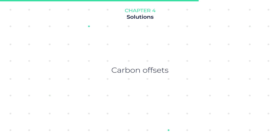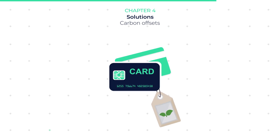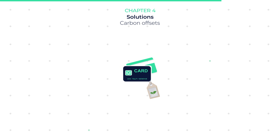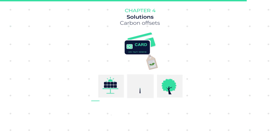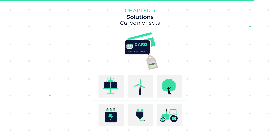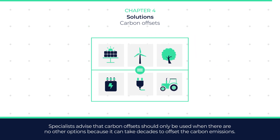Carbon Offsets. Another possibility is the utilization of carbon offsets. A carbon offset is a payment that you make to help fund a project that reduces carbon emissions, such as developing solar power plants to reduce the use of fossil fuels, or removing carbon dioxide from the atmosphere like planting forests. The number of offsets you can buy can theoretically match the number of carbon emissions you produce, so the two can be cancelled out. Though they appear to be a good solution, specialists advise that they should only be used when there are no other options, because it can take decades to offset the carbon emissions.